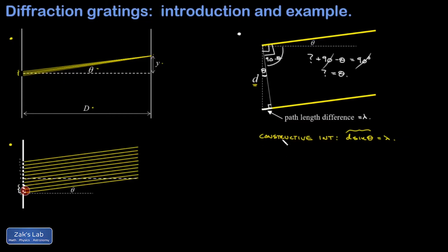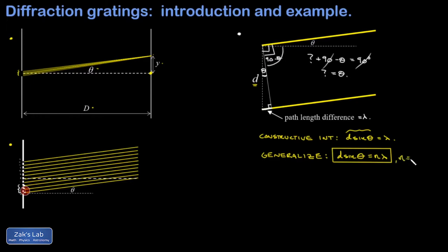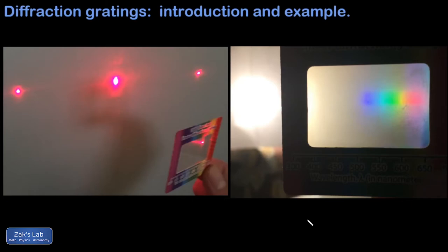In general, we can have multiple locations of constructive interference given by d·sinθ = nλ, where n is an integer multiple of the wavelength. Note that n = 0 should be included: at an angle of zero — the center line — the path length difference from adjacent slits is zero, so they stay in phase and produce a bright spot right along the center. In practice you'll see one or maybe two interference maxima before you basically go off the screen.